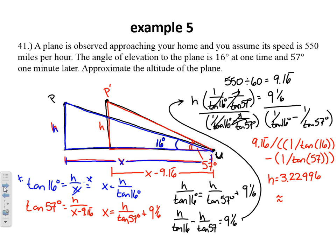I get H equaling 3.22996 miles. So approximately 3.23 miles is how high that plane is in the air. Now if we take that answer and multiply it by 5,280, that's about 17,054 feet in the air. And you know that seems pretty logical for how high a plane would be flying in a residential area. So our answer does seem to make sense. It's not like the plane is 16 feet off the ground or something obnoxious. Either of these answers would be acceptable.